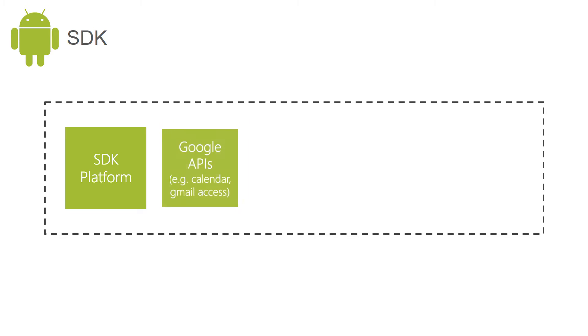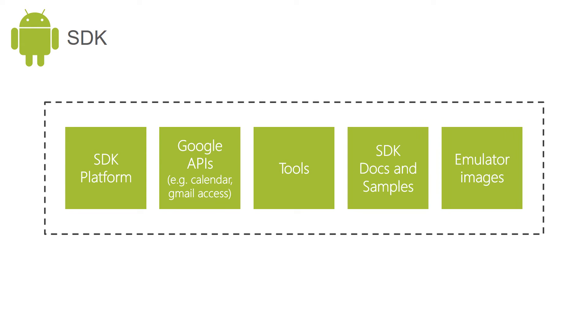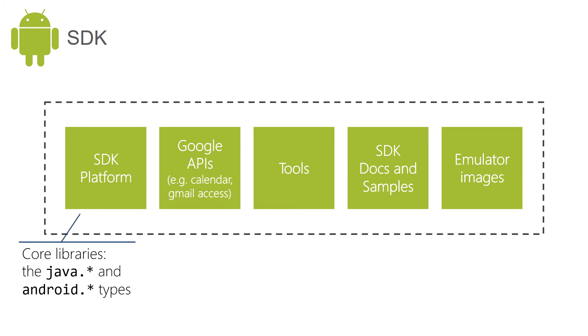We also need the Android SDK to create Android applications. The Android software development kit contains quite a few things needed for native Android development, including Android-specific versions of the Java libraries. These contain utility types for common tasks like string handling, networking, data structures, etc., as well as the Android libraries.